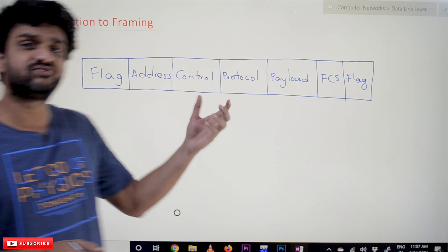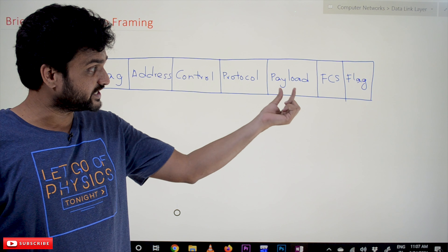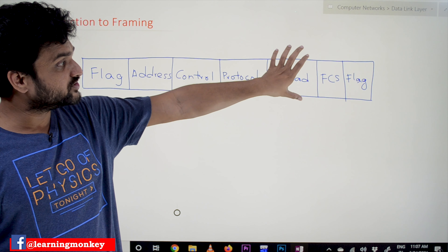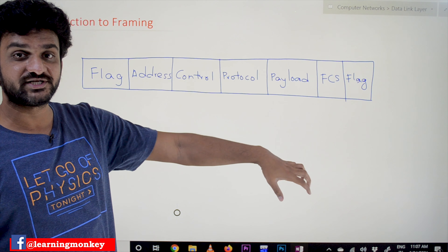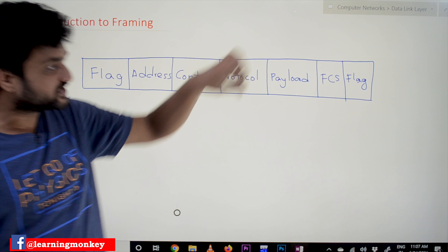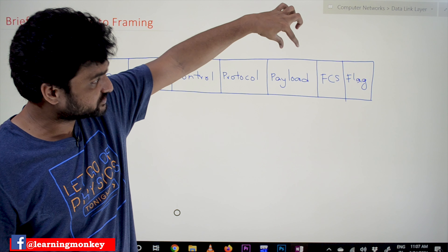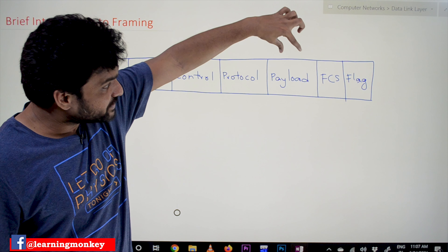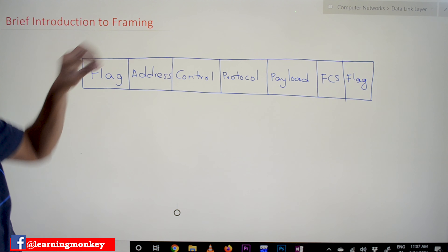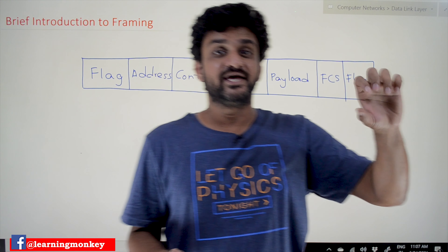First, why we need to have these fields added to the payload — payload meaning the data included with some extra data. So to this payload, which we call data, some extra fields will get arranged. What these extra fields are and why we have to add them is what we will explore.